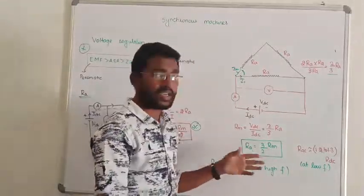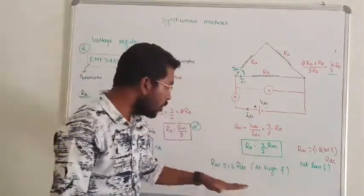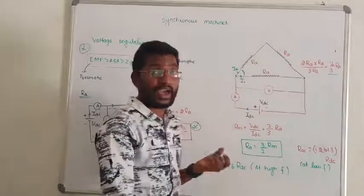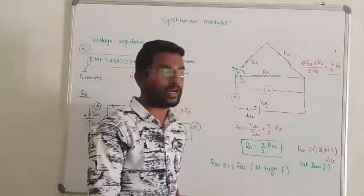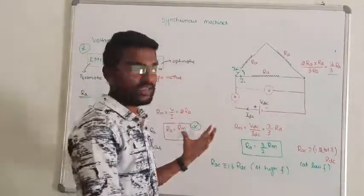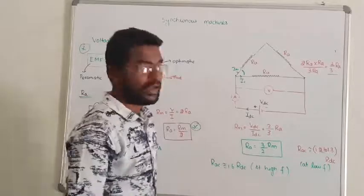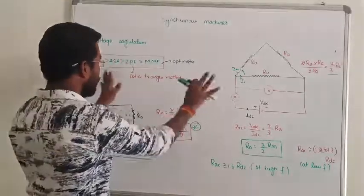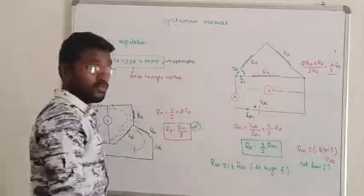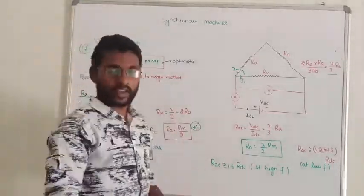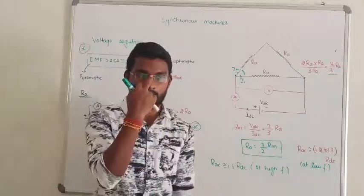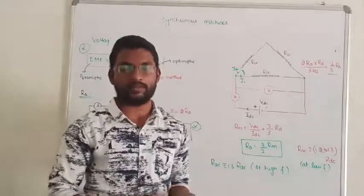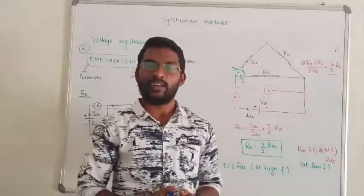So this is all about measurement of armature resistance for both star-connected and delta-connected circuits. I hope you all understand. If there are any doubts, you can ask in the comment section. Thanks for watching — thank you all.